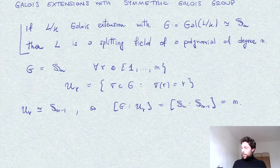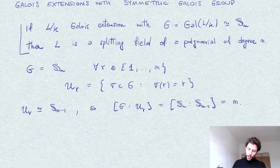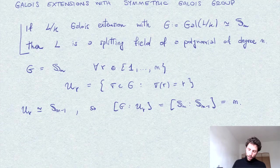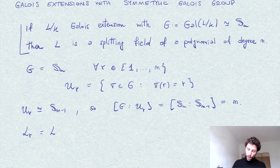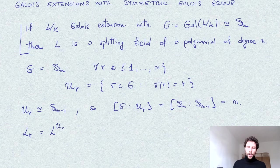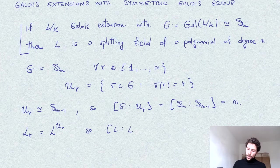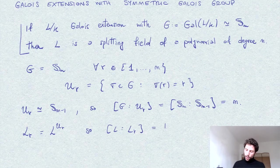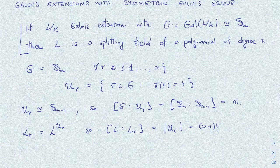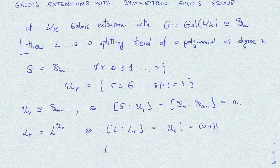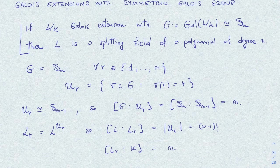So applying the fundamental theorem of Galois theory, the correspondence, I consider the fixed field. Let's denote it by LR, so the elements of L which are fixed by UR. So we have that the index of LR in L is the order of UR, therefore (n-1) factorial. And so the index of LR in K is therefore n, for example by the tower law.